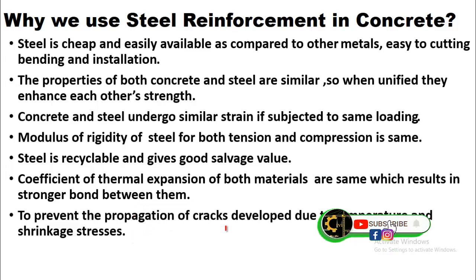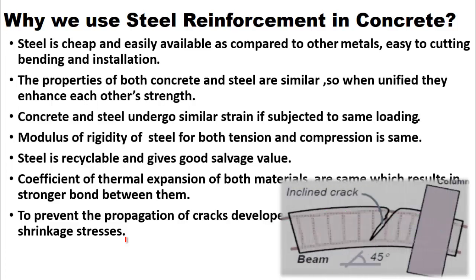To prevent the propagation of cracks developed due to temperature and shrinkage stresses, we use steel reinforcement. As discussed in one of my other videos, shear reinforcement is provided in beams or columns in the form of stirrups or ties. Steel also prevents the propagation of cracks — as you can see, these cracks are shear cracks, and the shear reinforcement in the form of stirrups in beams and ties in columns prevents the propagation of such cracks.